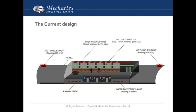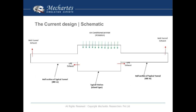The ventilation system that was existing was like this: there was a mid-tunnel exhaust running at 80 CMS, an under-platform exhaust running at 50 CMS, and an air-conditioned air supply at 120 CMS through the false ceiling and ducted supply coming from the air handling unit. This is how the schematic looked, and this was the CFD model chosen for the project.